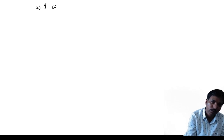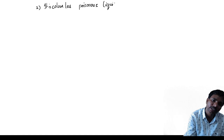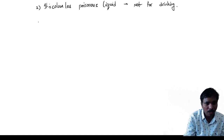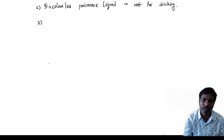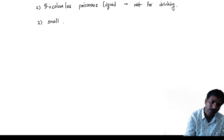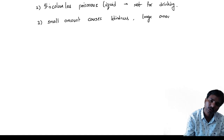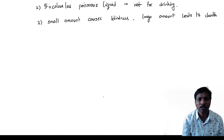Methanol is a colourless, poisonous liquid. That means it is not for drinking because it is poisonous. If you take a small amount, it may cause blindness. A large amount may lead to death. So be very careful with methyl alcohol or methanol.